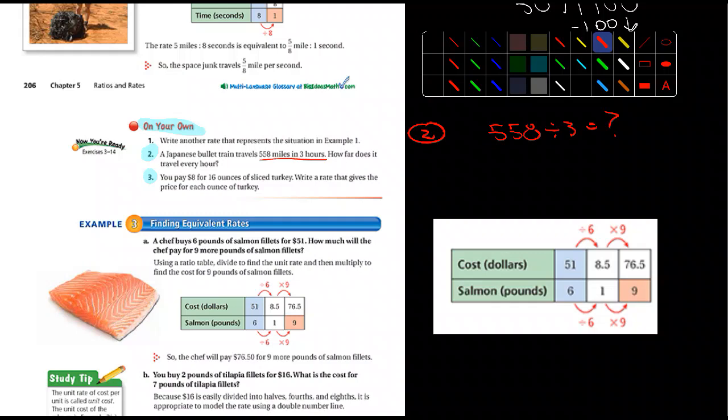Number three, it says you pay $8 for 16 ounces of sliced turkey. Write a rate that gives you the price for each ounce of turkey. So in this one, you need to figure out what each ounce would be, and so you're going to divide the eight, this is number three, you're going to divide it by 16.